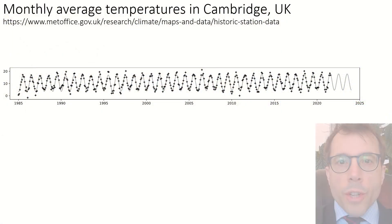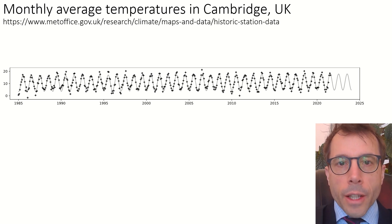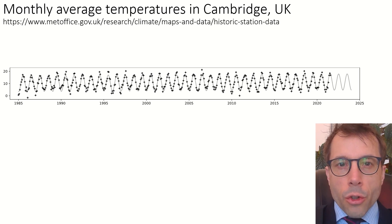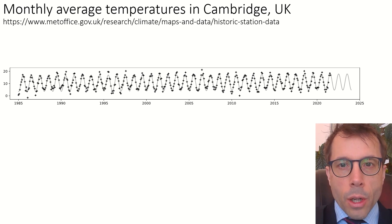Just a note — whenever I do data science in these videos, you can check out the code behind it. The code is all stored in Jupyter notebooks, and they're linked to from the course website. In this plot, the dots show monthly average temperatures measured at a weather station in Cambridge, and the grey line shows a fitted model. The model I've used here has a sinusoid plus a long-term trend.